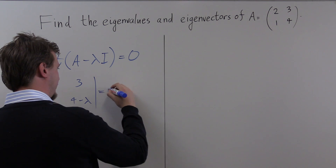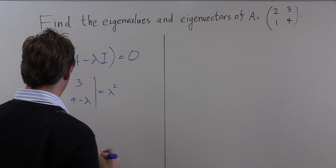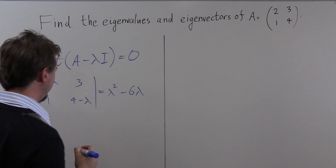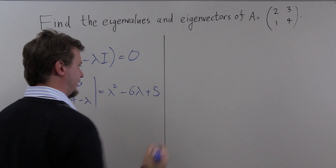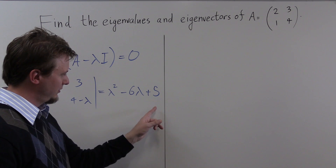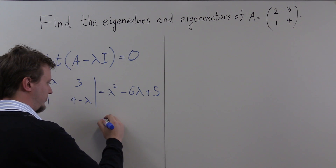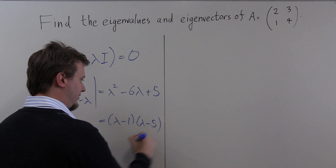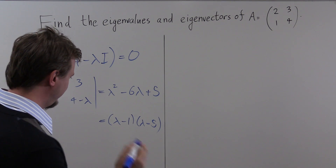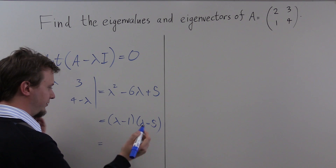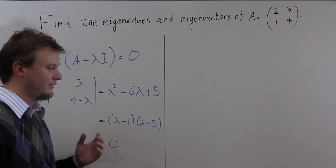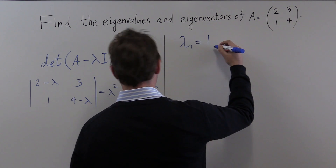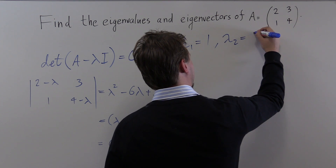Doing this calculation gives lambda squared minus 6 lambda plus 5. This factors as (lambda minus 1)(lambda minus 5), and setting the characteristic equation equal to zero, the solutions are quite obvious: lambda₁ equals 1 and lambda₂ equals 5.